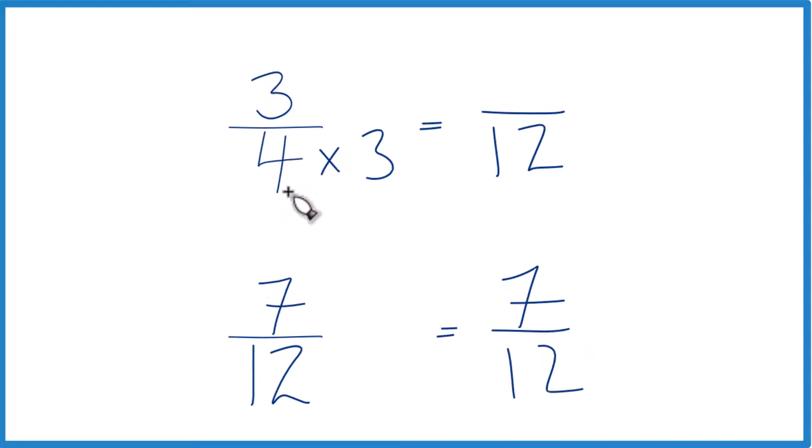We can't just multiply the denominator by 3 here. We need to multiply the numerator by 3 as well. Because 3 over 3, that's just 1. We're multiplying by 1. We don't change the value, just the way it's represented.